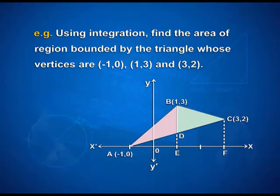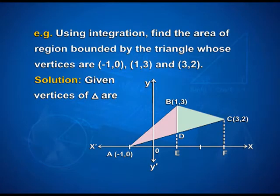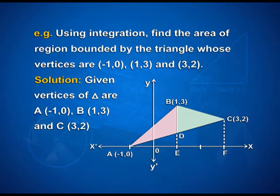The first question is: using integration, find the area of the region bounded by the triangle whose vertices are A(-1, 0), B(1, 3) and C(3, 2). As seen in the figure, A is at (-1, 0), B is at (1, 3) and C is at (3, 2). We need to find the area of the triangle between these three vertices.